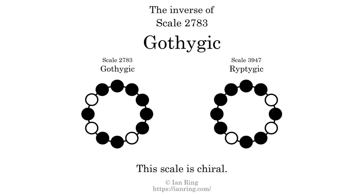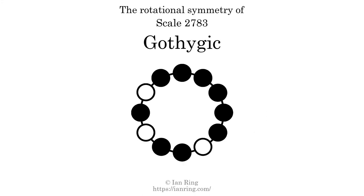The inverse of a scale is a mirror image — it is what you get when the sequence of intervals is reversed. The inverse of this scale is scale 3947, also known as Ripetagic. This scale is chiral; it cannot transform into its inverse by rotational transformation. This scale has no rotational symmetry.